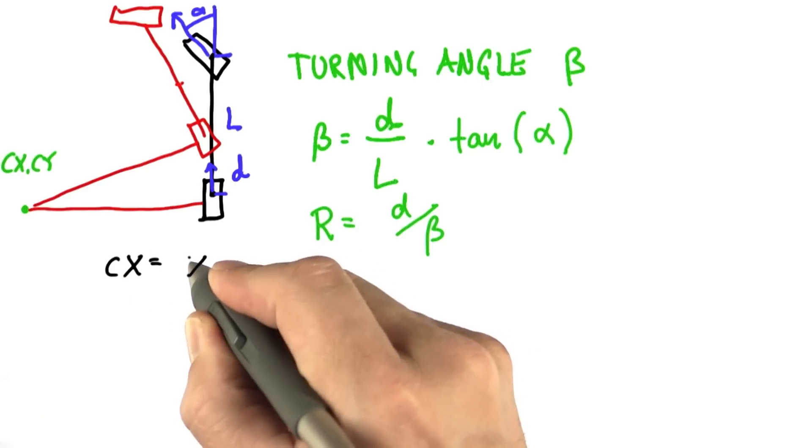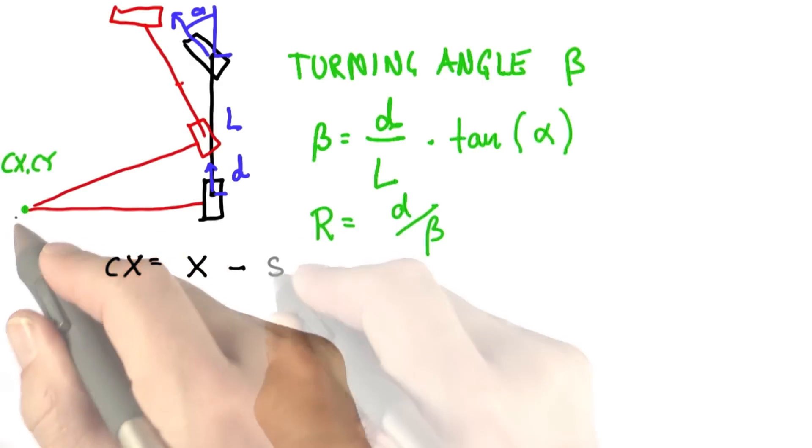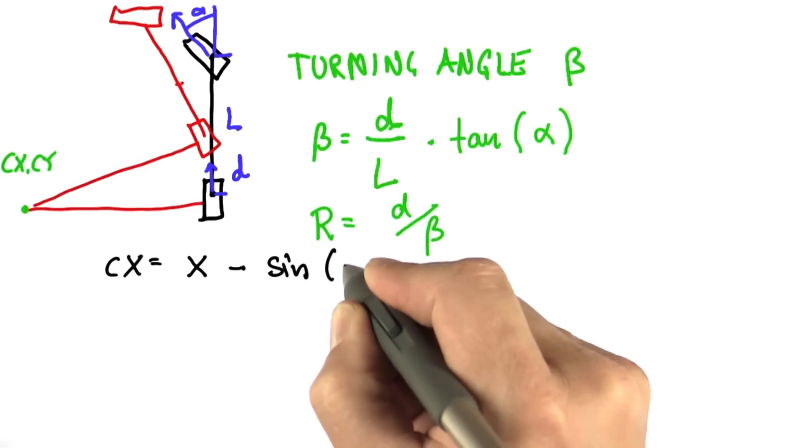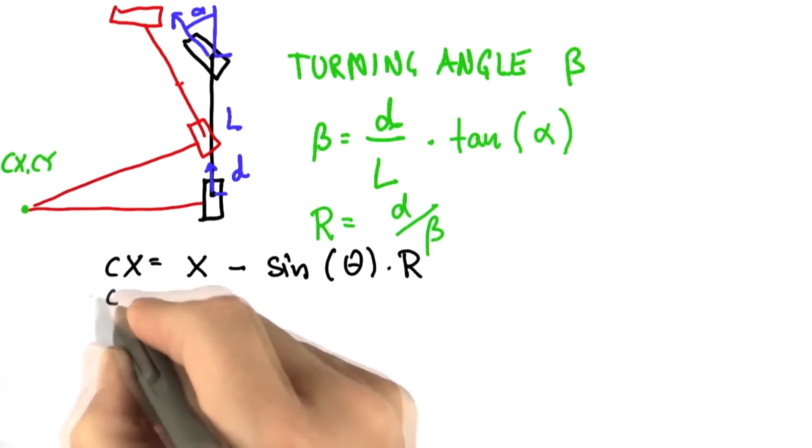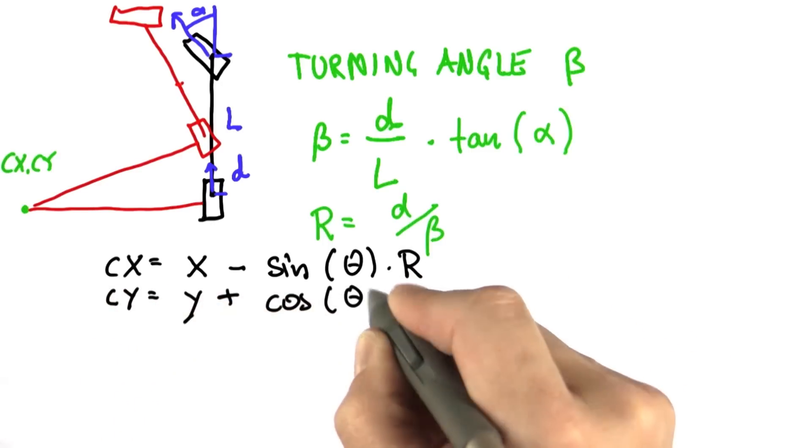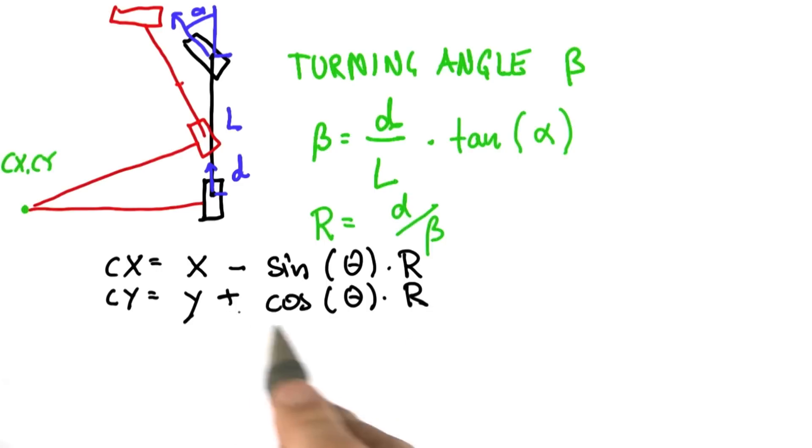Cx is the x-coordinate of the robot x minus, now we go to the left, the sine of the robot orientation before motion times radius r. Similarly, Cy is this expression over here, y plus cosine of the orientation times r.